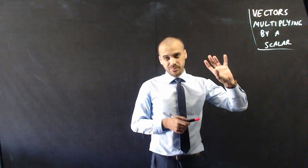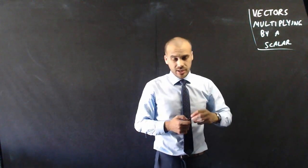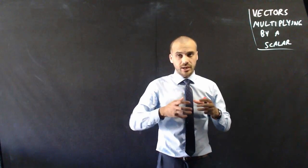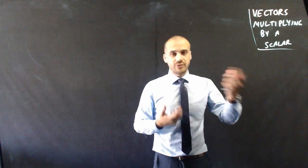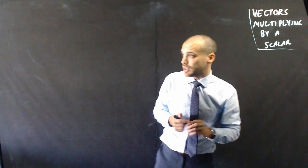So this time we're going to take a vector and we're going to multiply it by a scalar. Now you've multiplied a matrix by a scalar before, a scalar is just a number. Multiplying a vector by a scalar is not going to be that complicated either.